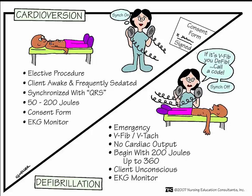Defibrillation is the most effective method of terminating ventricular fibrillation and pulseless ventricular tachycardia. Passage of the DC electrical shock through the heart depolarizes the cells of the myocardium to allow the SA node to resume the role of pacemaker. If the patient's rhythm and assessment indicate ventricular fibrillation and cardiac arrest, then the initial action should be to defibrillate.